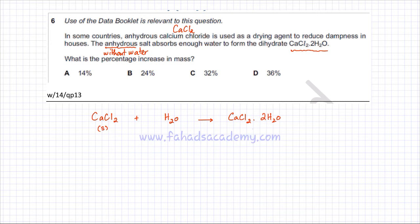So that's a solid as well, and to balance this equation, there would be two water molecules. So this is the reaction that's happening, and the question states, what is the percentage increase in mass? Now, initially you had CaCl2, and it converted to CaCl2.2H2O, so we need to find the percentage increase in mass.